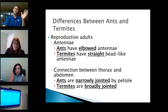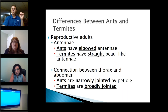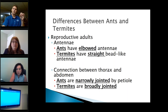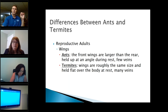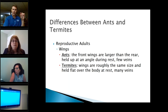A big question: what are the differences between ants and termites? Ants have elbowed antennae; termites have straight, bead-like antennae. The connection between the thorax and abdomen is also different. Ants have a skinny, narrowly jointed waist; termites are broadly jointed, kind of shaped like a cigar. Their wings are also different. Both ants and termites have wings when swarming for part of the year. For ants, the front wings are larger than the rear and held up at an angle during rest. Termite wings are roughly the same size, held flat over the body at rest, and they have many veins.